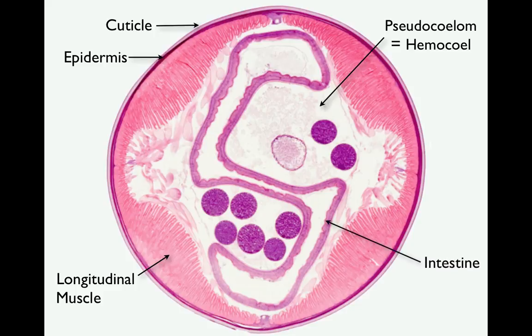The large S-shaped structure that you can see here is the intestine. Unlike the planaria that you may have looked at earlier, Ascaris and other roundworms have a complete digestive system, with a mouth at one end and an anus at the other. This is considered to be more efficient for digesting food and eliminating waste than a gastrovascular cavity.